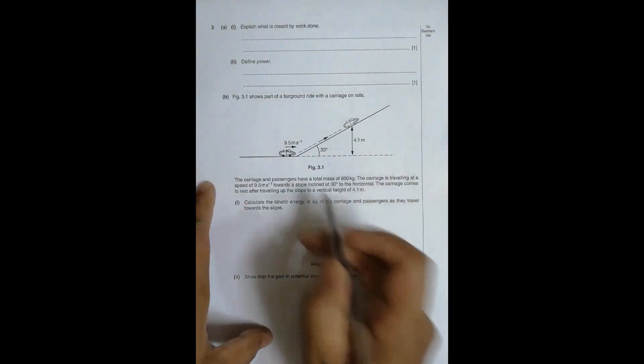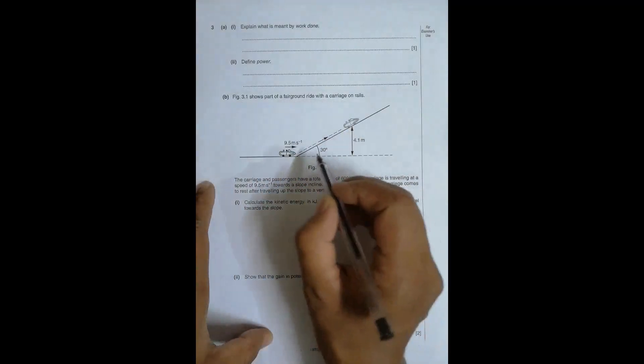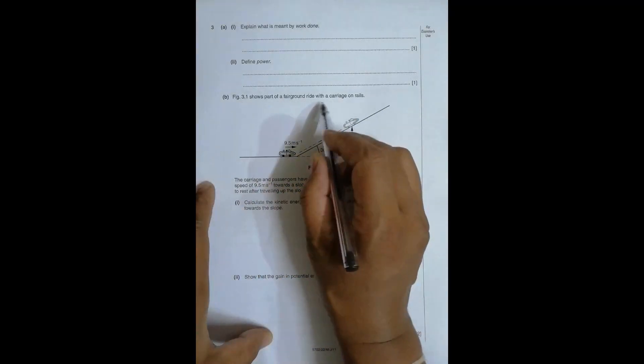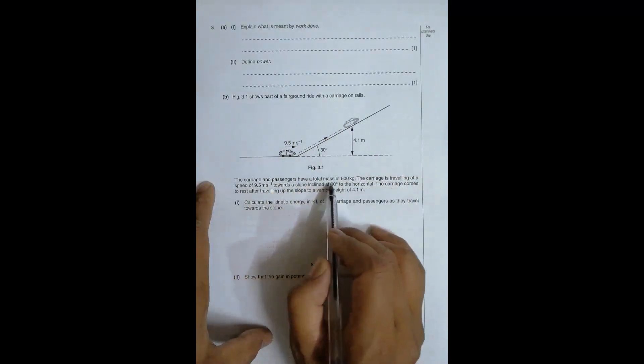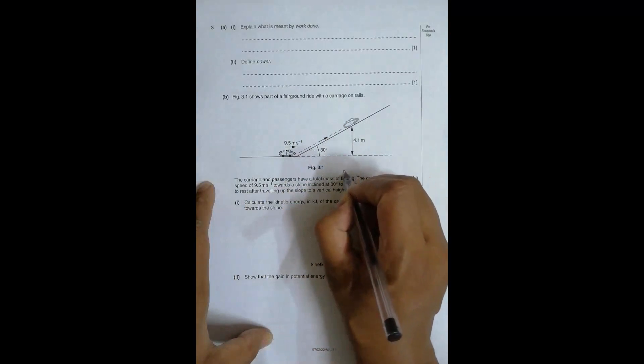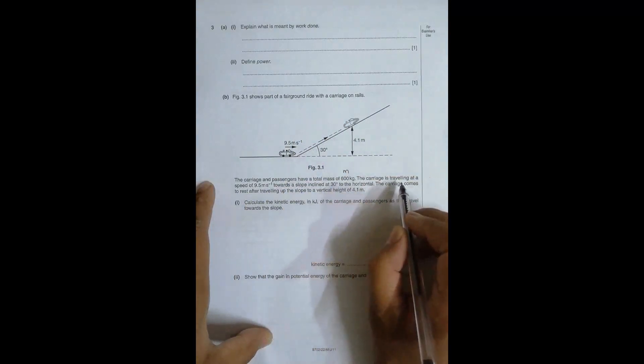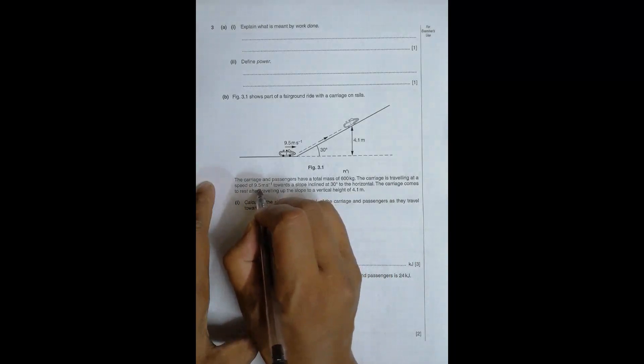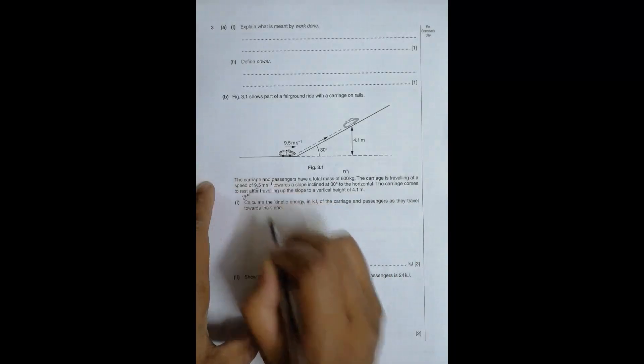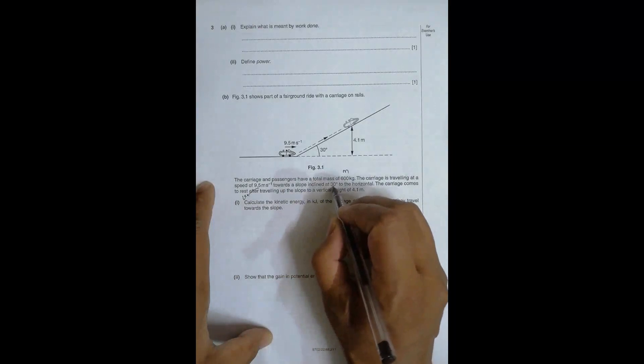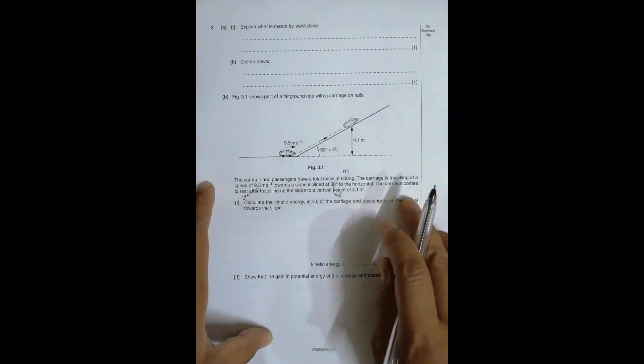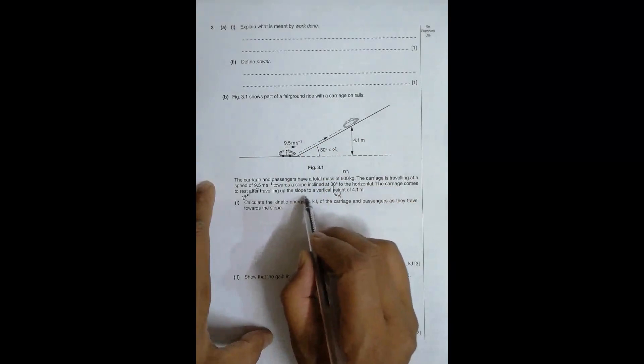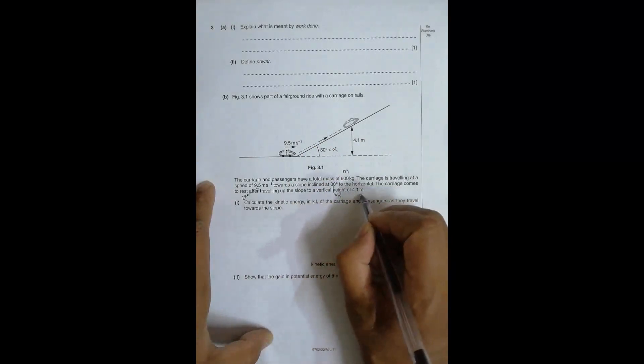In part B, Figure 3.1 shows part of a fairground ride with a carriage on the rails. The carriage and passengers have a total mass of 600 kg, traveling at a speed of 9.5 meters per second towards a slope inclined at 30 degrees to the horizontal. The carriage comes to rest after traveling up the slope to a vertical height of 4.1 meters.